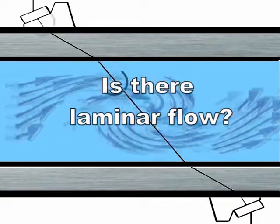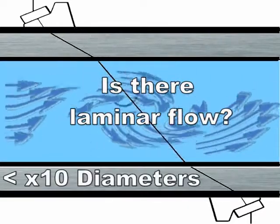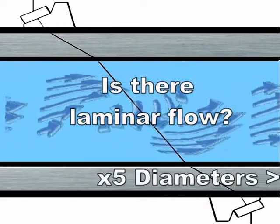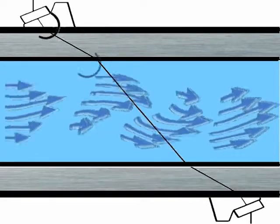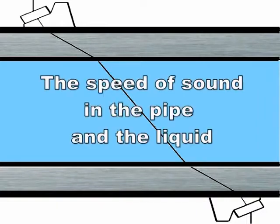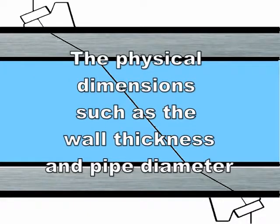Typically you'll have laminar flow when you have 10 diameters upstream and 5 diameters downstream from the flow meter clear of any obstructions. We need to know the speed of sound in the pipe and the liquid for the refraction angle calculation. The physical dimensions such as the wall thickness and pipe diameter.